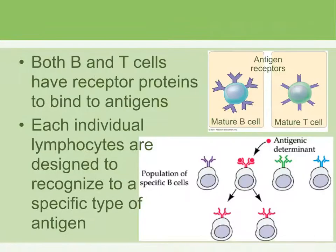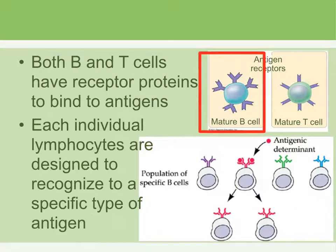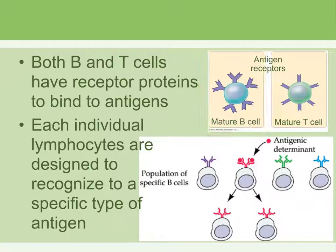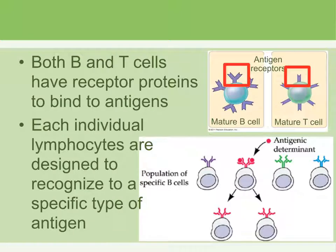Both B and T cells have receptor proteins that bind to the antigen. Here is a picture of a mature B cell and a mature T cell. They look very similar in structure, but the receptors are different. B cells have a Y-shaped receptor where antigens bind, and mature T cells do not have that Y shape.